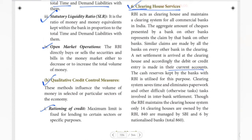For example, if there are 20-25 cheques, and there is 1 crore in the bank, the debit or credit of 1 crore is made in current accounts. Banks maintain a current account with RBI.